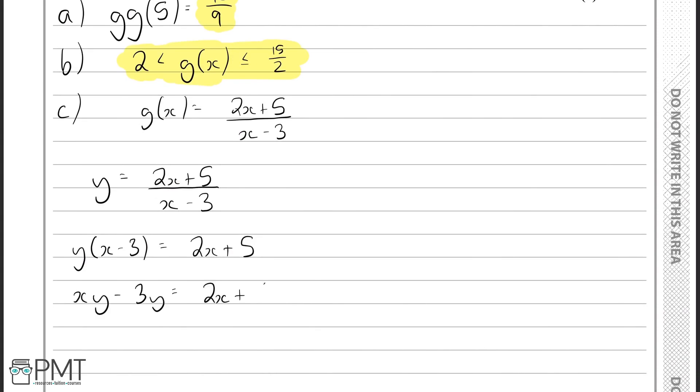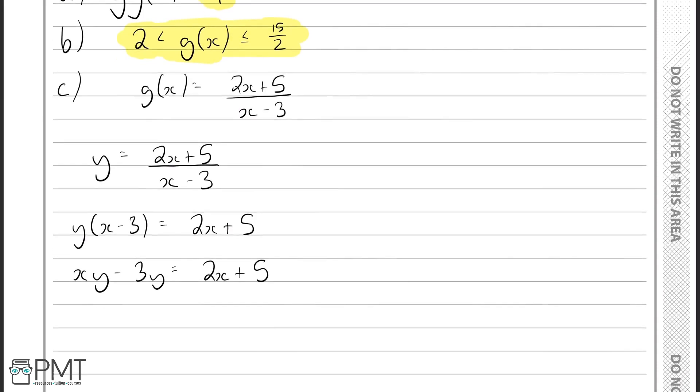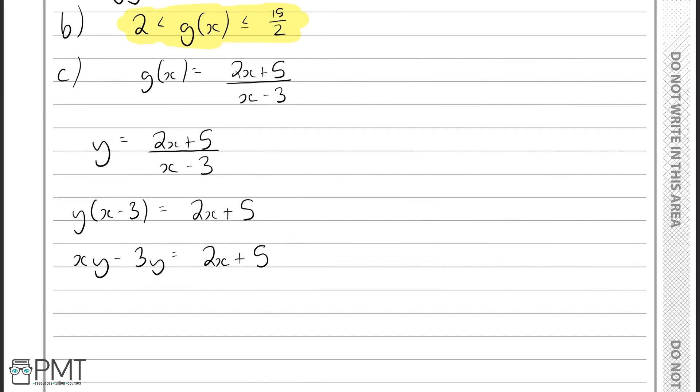Now, because we're trying to make x the subject of this formula, we want all the x's to be on one side and the y's and the constants to be on the other. So let's add 3y to both sides and take away 2x from both sides. So we have xy minus 2x equals 3y plus 5.